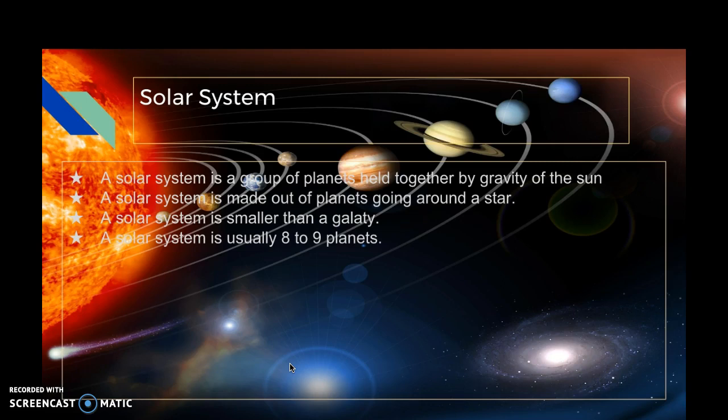A solar system is a group of planets held together by gravity of the sun. A solar system is made out of planets going around a star. A solar system is smaller than a galaxy and usually has eight to nine planets.